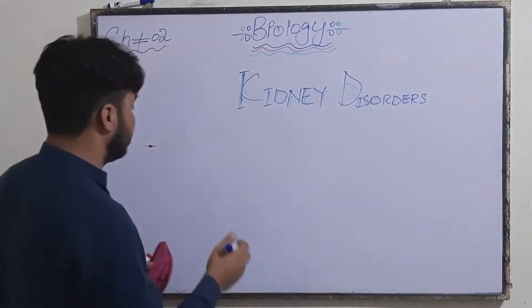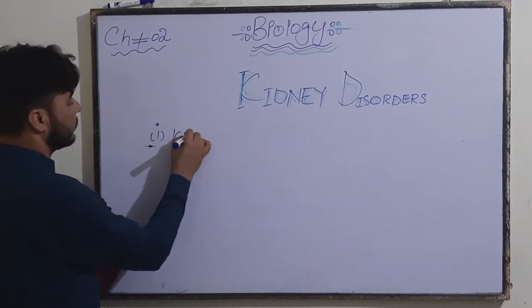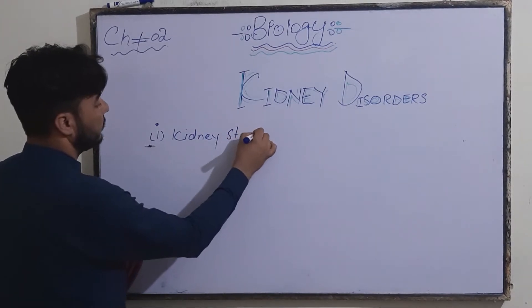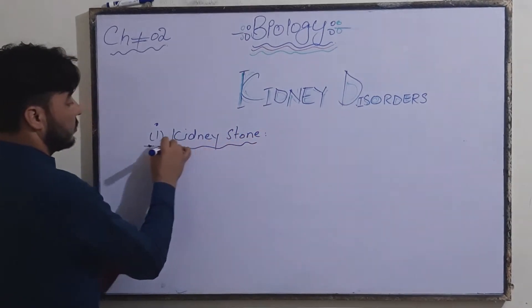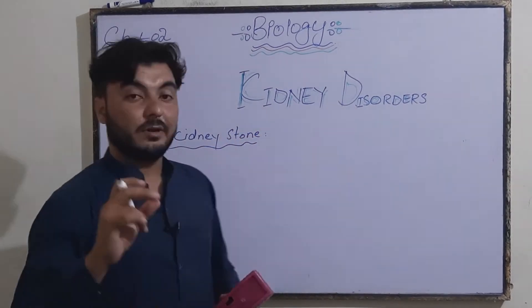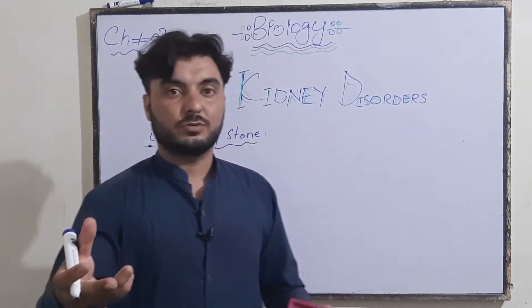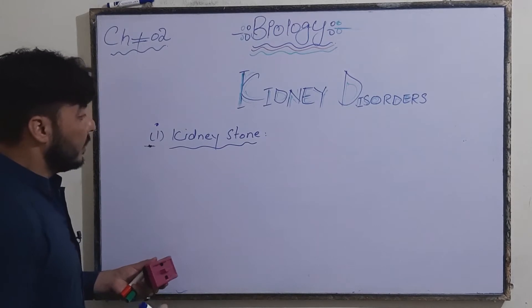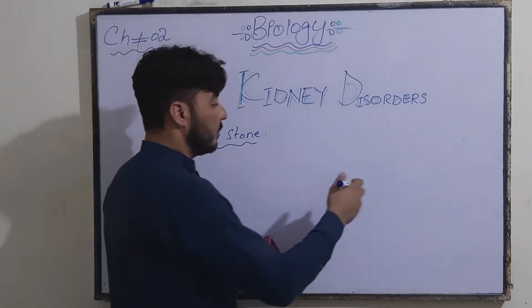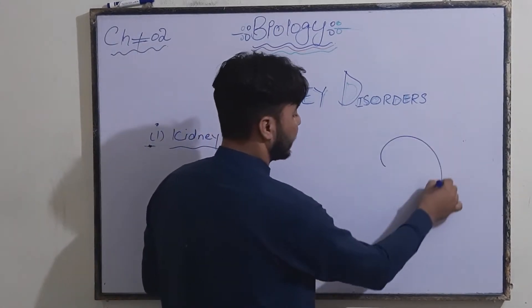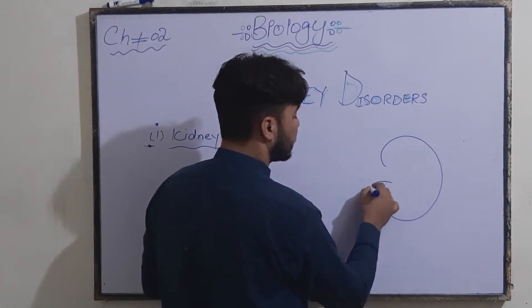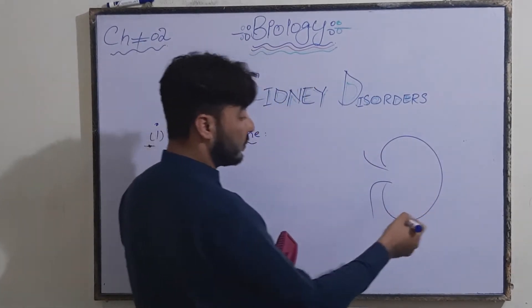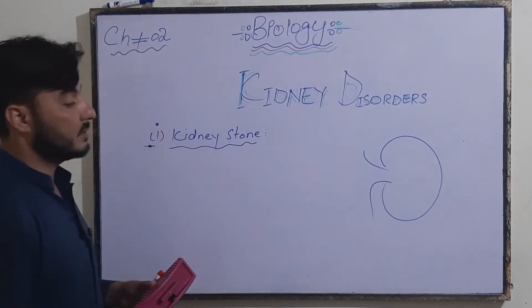The first type is kidney stones. As the name indicates, a stone is a solid material. The human kidney consists of different types of blood vessels, pyramids, and nephrons. The nephron is the basic unit of the kidney and is located inside the kidney.